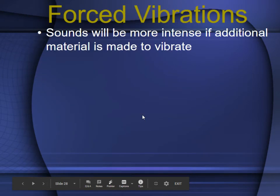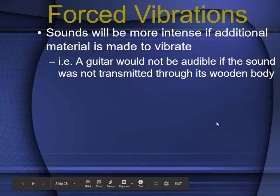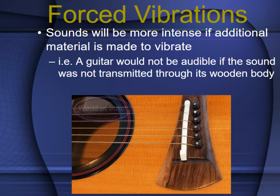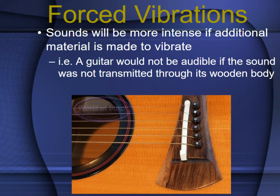These are shorter notes — only four more slides. Forced vibrations are the sounds that can come from a string if plucked. A guitar would produce an audible sound, but it would be inaudible without the open wooden body — that's why an electric guitar needs an amplifier. Sounds are more intense if additional material is made to vibrate. The body of the guitar helps it vibrate. For a drum, a snare drum has a tightened metal chain around the bottom, creating a louder and more resonant sound than what a tom drum produces.